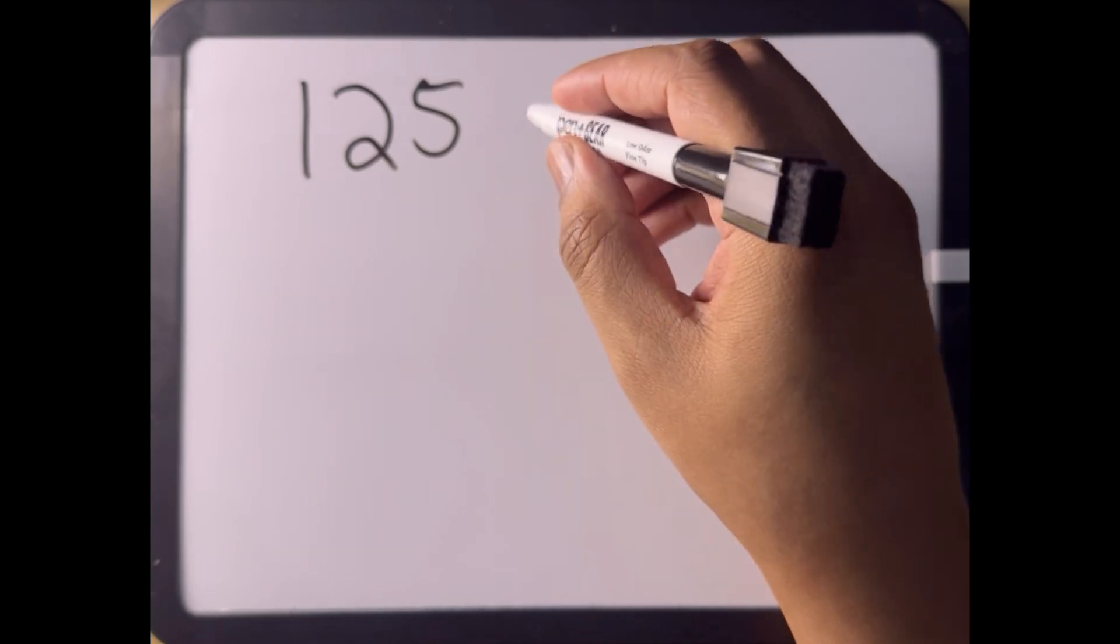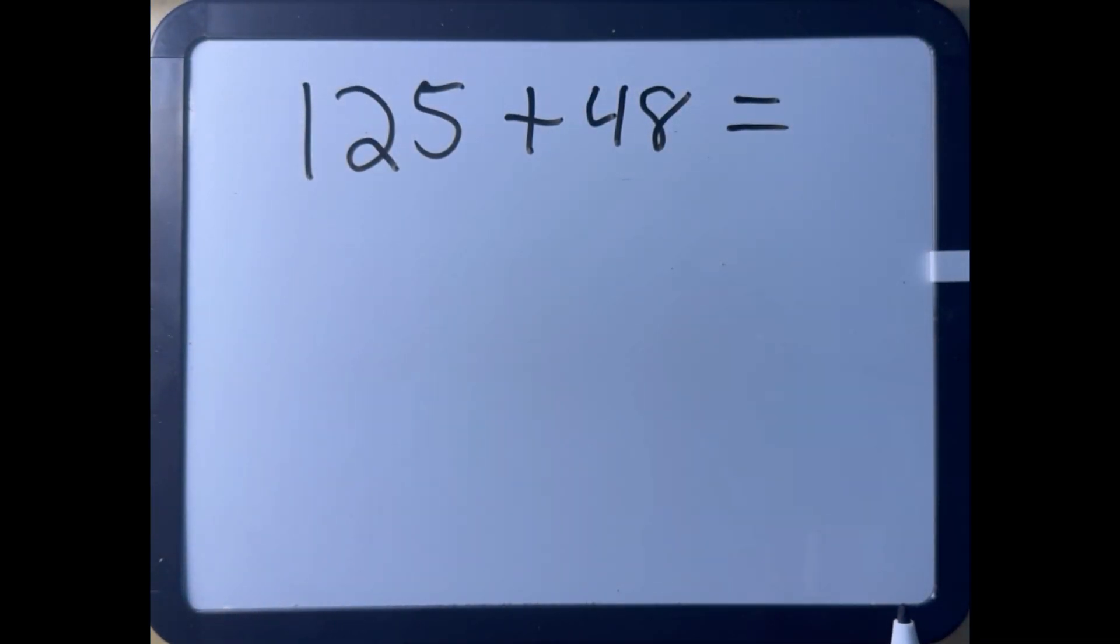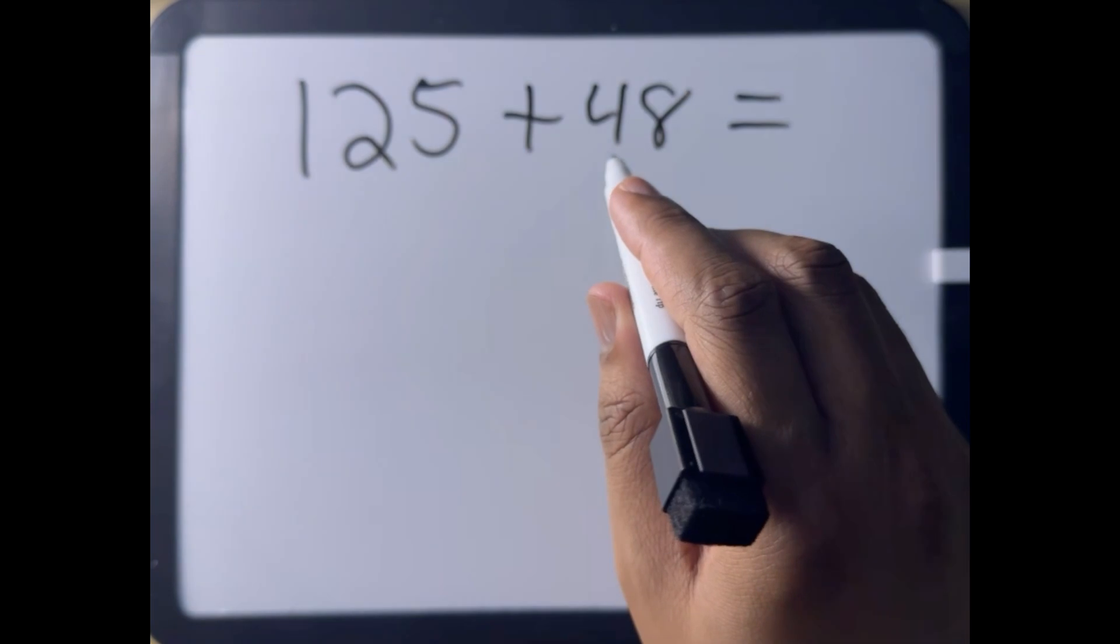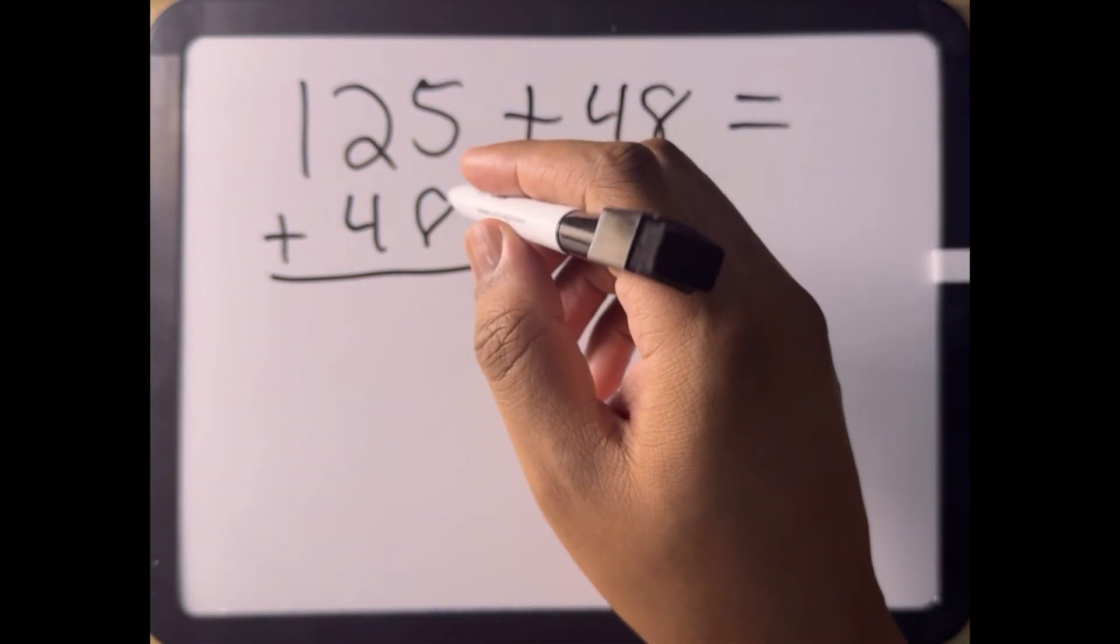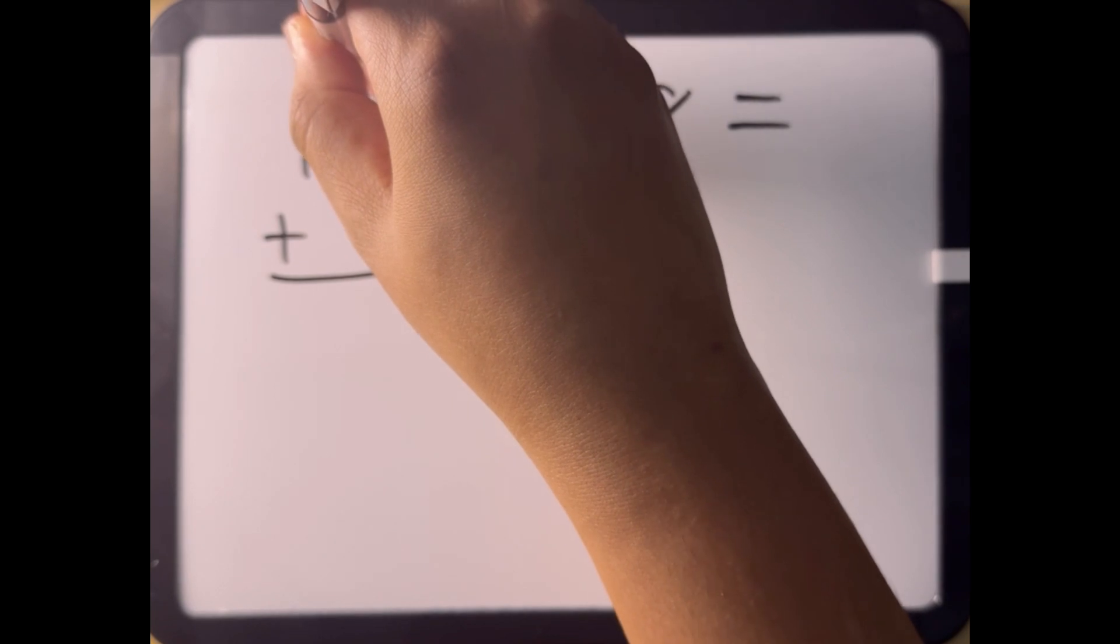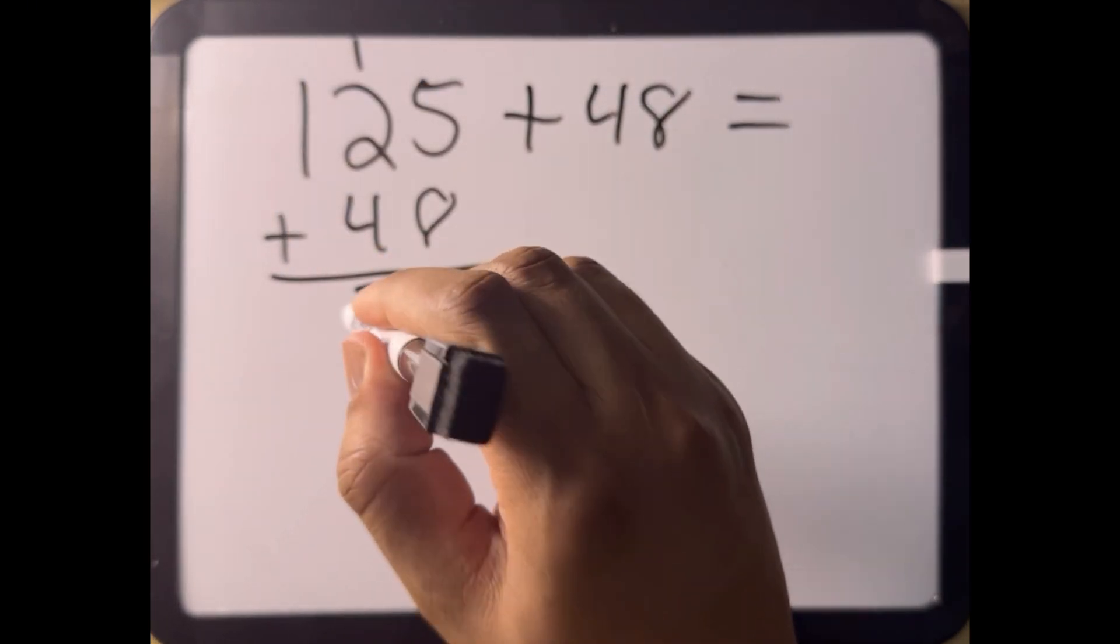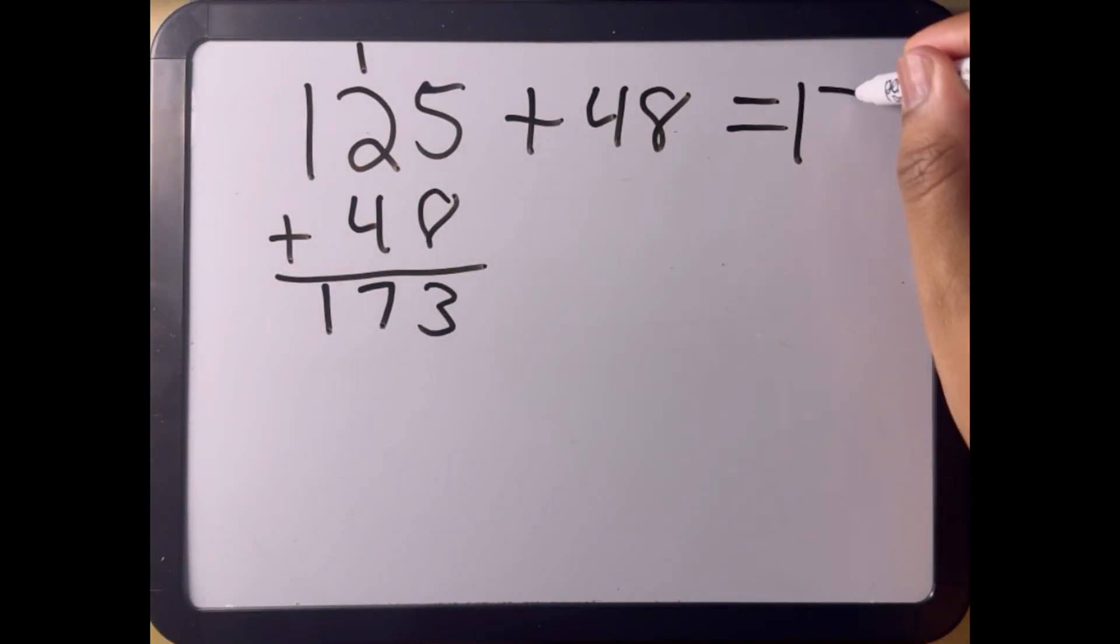We'll write our equation as 125 plus 48 equals. Now, when you're on the ASVAB, you can't use your calculator. So if you need to solve this equation without a calculator, follow these steps. We'll take the lower number and put it under 125. We solve from the top down: 5 added to 8 is 13. We carry the 1 to the top of the next column. Now we add all this together: 4 plus 2 is 6, plus 1 is 7. And we bring the 1 down. So the answer to 125 plus 48 is 173.